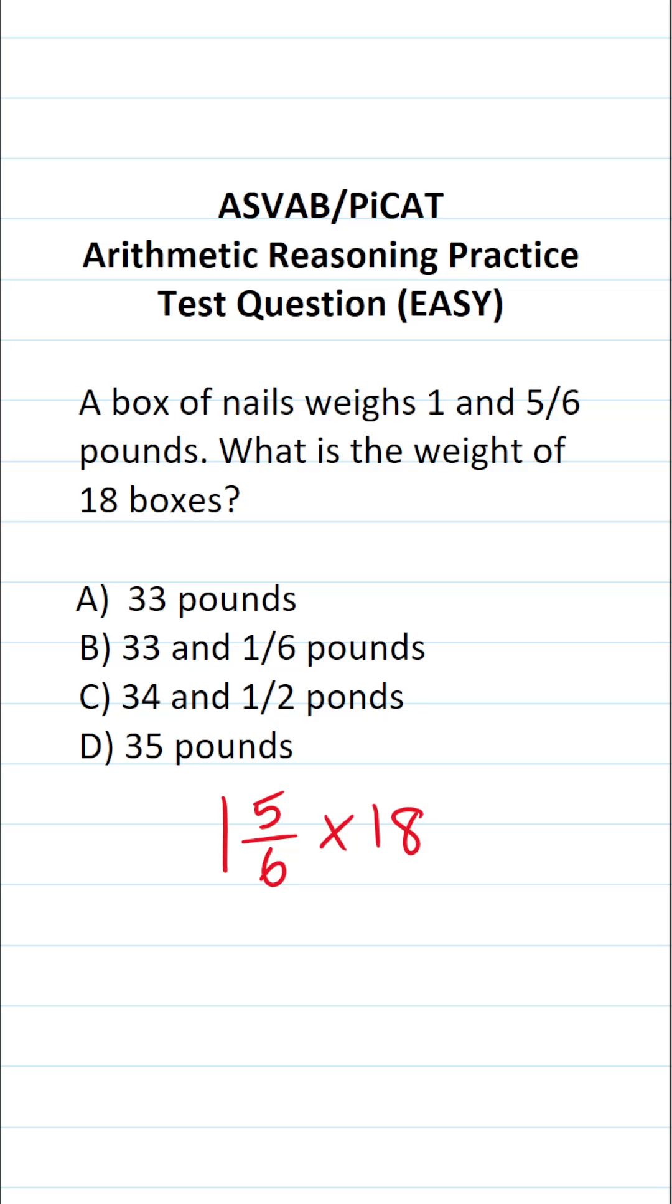I want to convert 1 and 5/6 pounds to an improper fraction. To do that, I'm going to do 1 times 6, which is 6, plus 5, which is 11. So 1 and 5/6 is the same thing as 11 over 6.